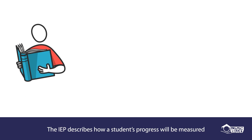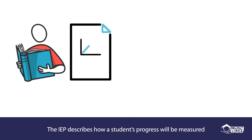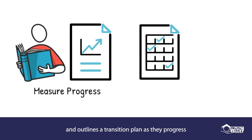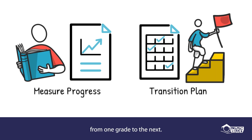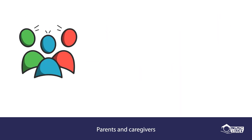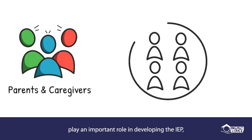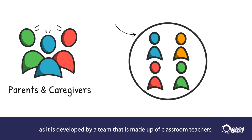The IEP describes how a student's progress will be measured and outlines a transition plan as they progress from one grade to the next. Parents and caregivers play an important role in developing the IEP, as it is developed by a team that is made up of classroom teachers,